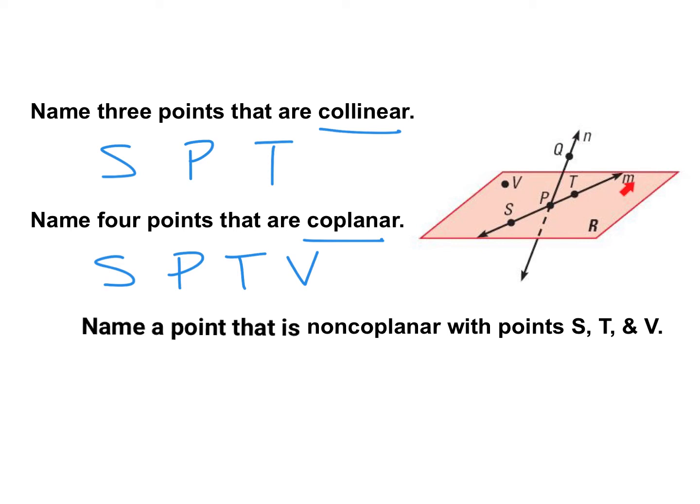Notice how here on the right, we have a lowercase m. That is the name of the line. So we have line m. There's no points associated. When it's lowercase and in script, you can say that this is the name of the line. Same thing with the n. Lowercase meaning the name of this line. This capital R, there's no point associated with it. So that's actually going to be the name of the plane. This is plane R.